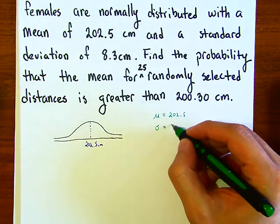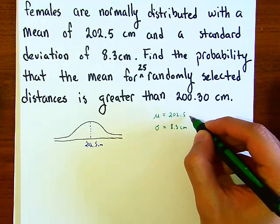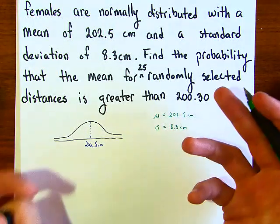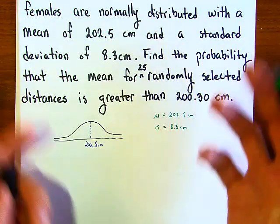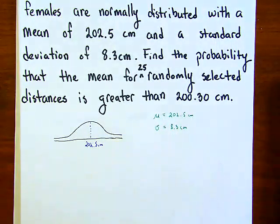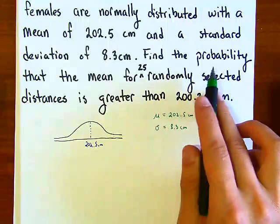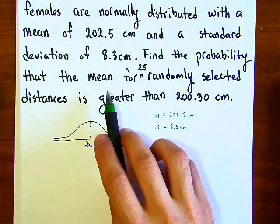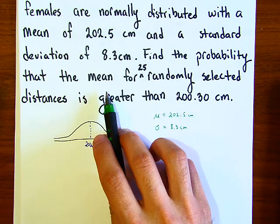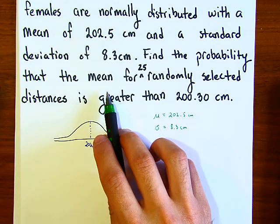And here we're talking about a population of adult females, so we need to use our Greek symbols. It says find the probability that the mean for 25 randomly selected distances is greater than 230 centimeters.